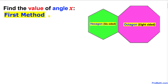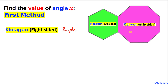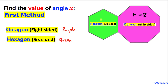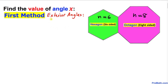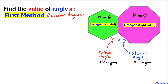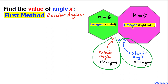Here is our very first method. Let's talk about this regular octagon — an eight-sided shape, the purple one — so I'm going to call n equals 8. And here's our green hexagon, a six-sided shape, so n equals 6. In this first method we will be talking about exterior angles of these polygons. If we draw this vertical line, we can see that one side is the exterior angle for the hexagon and the other angle is the exterior angle for the octagon.